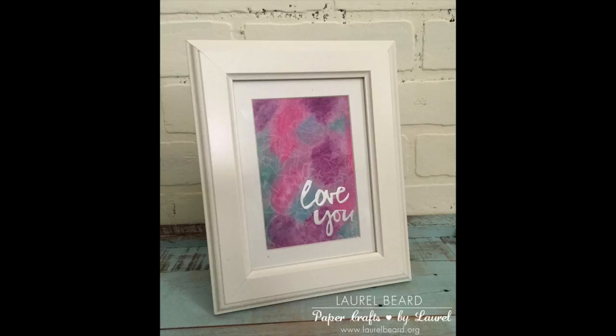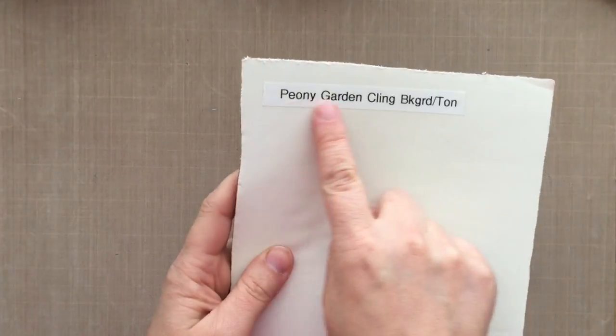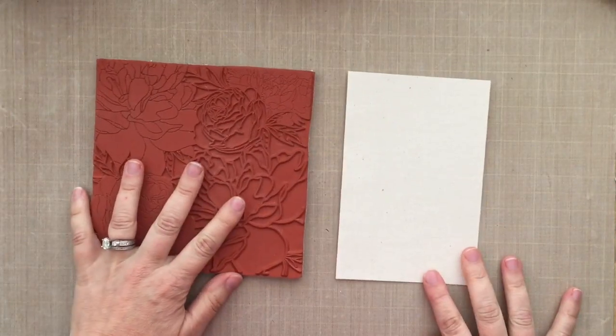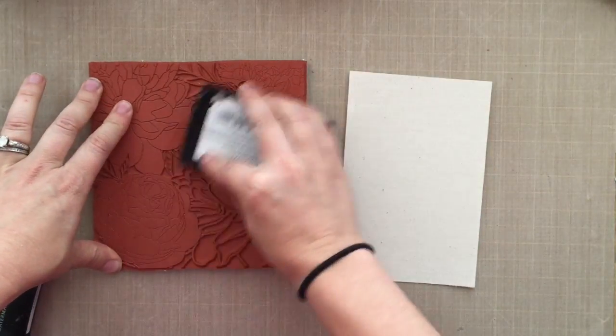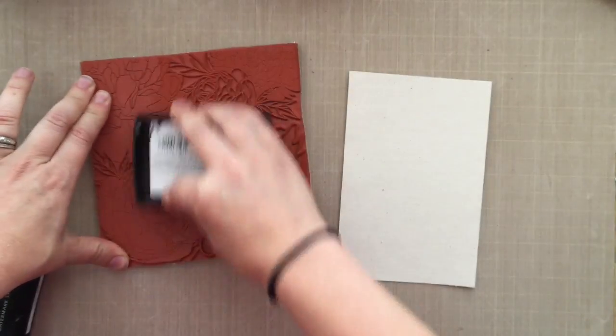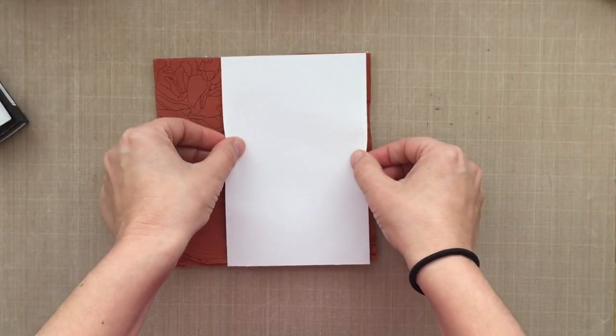This is the sticky back canvas here and I'm pairing it up with the peony garden background stamp by a company called The Ton. I'm going to ink up that peony background with some Versamark ink and then I'm going to press my canvas directly onto the stamp.